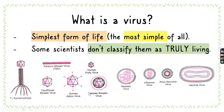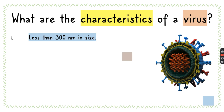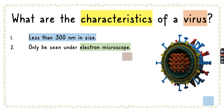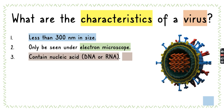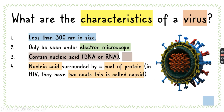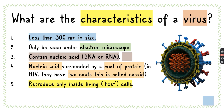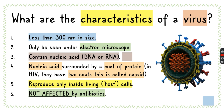Here are examples of viruses and their main shapes — they do come in different types of shapes. The characteristics of viruses: they are about less than 300 nanometers in size and can only be seen under the electron microscope. They contain nucleic acid, which is DNA or RNA, and the nucleic acid is surrounded by a coat of protein. The hereditary material of viruses can either be DNA or RNA. In HIV, they even have two coats — the second coat is called the capsid. They reproduce only inside living host cells, and they are not affected by antibiotics.